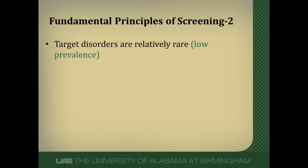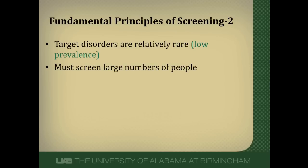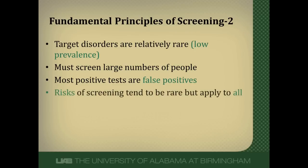The target disorder that we're screening for is usually pretty rare, meaning it has a low prevalence in our entire population, and this will be important when we interpret test results. We have to screen large numbers of people to find the few that have that particular disease. Most positive tests are going to be false positives — think about PSA screening, where most elevated PSAs are probably related to BPH and not prostate cancer. The risks of screening affect everybody, but the benefits accrue to only a very few people, so risks often outweigh the benefits in many screening programs.